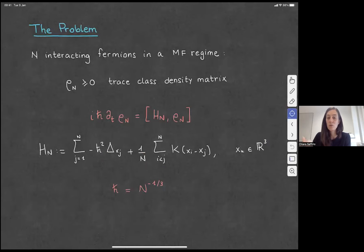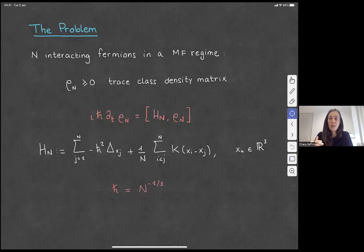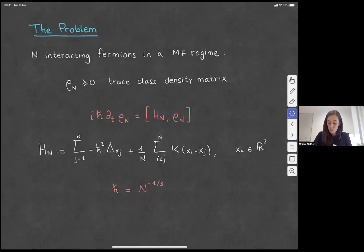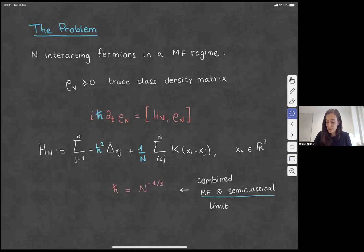In general, the dimension gives exponent minus 1 over d. From a physical viewpoint, I'm looking at many fermions — the number of particles goes to infinity — and at the same time I'm looking at big quantum numbers, so the Planck constant can be considered small. We have this combined mean field and semi-classical limit. The h-bar in the Liouville–von Neumann equation plays exactly the role of the Planck constant, so when you send N to infinity, h-bar goes to zero.